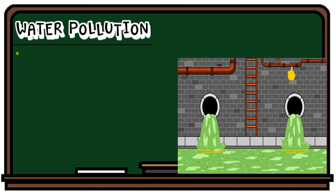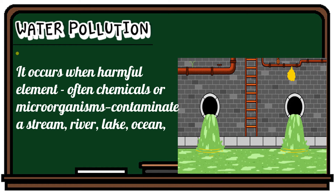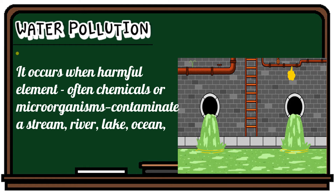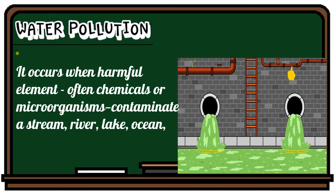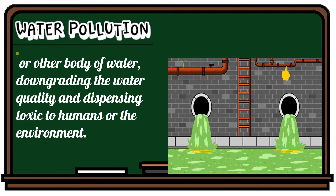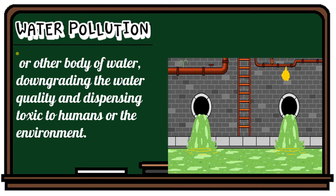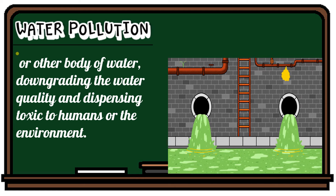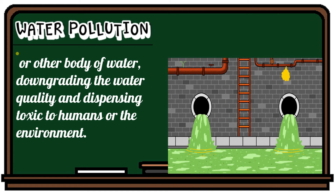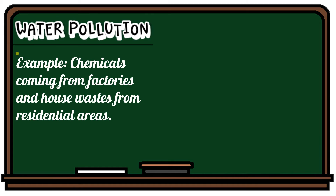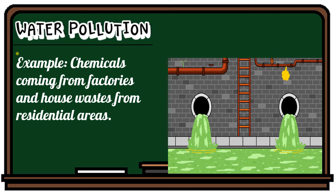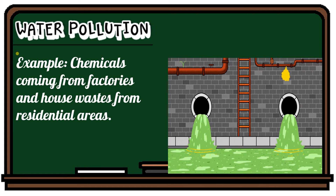Water pollution occurs when harmful elements, often chemicals or microorganisms, contaminate a stream, river, lake, ocean, or other body of water, degrading the water quality and dispensing toxins to humans or the environment. An example of water pollution is chemicals coming from factories and household waste from residential areas.